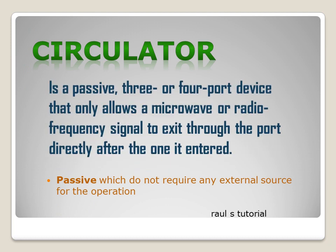A circulator is a passive 3 or 4 port device that only allows a microwave or radio frequency signal to exit through the port directly after the one it entered. Passive means it does not require any external source for operation.